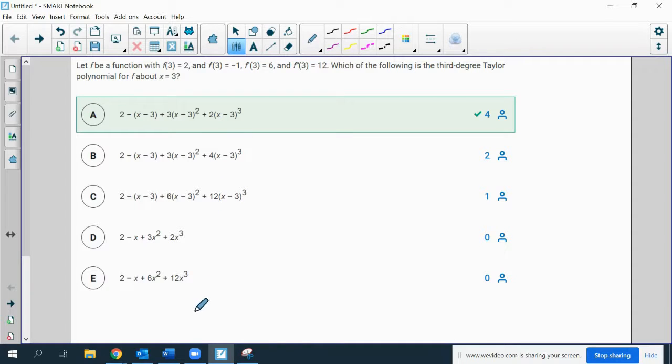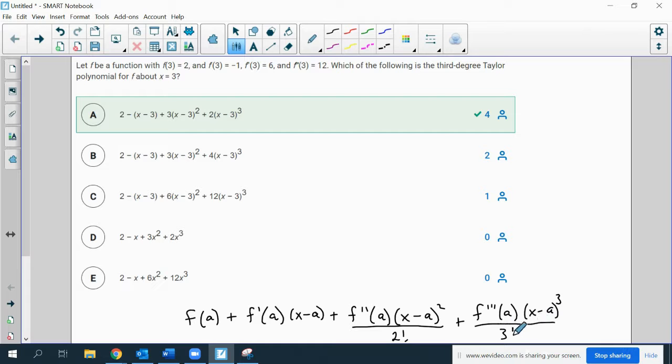A Taylor polynomial is the value of the function at a particular point, plus the value of the derivative at that point, times x minus that point, plus the second derivative times x minus the center squared over 2 factorial, plus the third derivative times x minus the center cubed over 3 factorial.